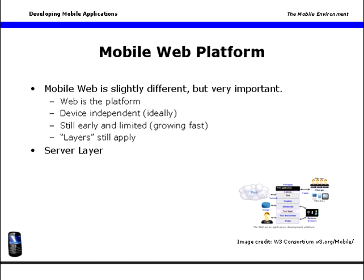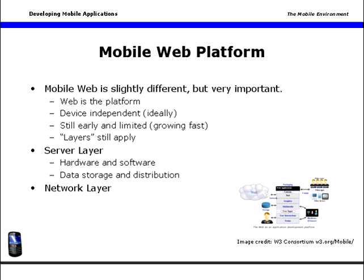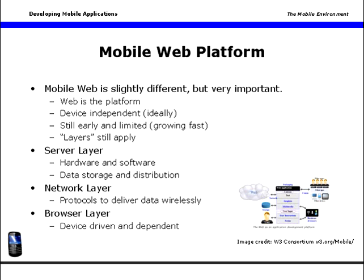At the server layer, the mobile web provides server hardware and software, data storage, and distribution technology. At the network layer, the mobile web moves data over internet protocols via wireless connections. And at the browser layer, mobile web apps make use of browser functionality to either handle data directly, much like your computer browser does but slower, or to provide functionality through browser plug-ins.